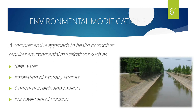The second part is environmental modification. Even if we keep ourselves very hygienic and health-aware, if the water we drink is filthy and contains coliform bacteria, we can't help it. The environment also should be health-promoting — we should be able to get safe drinking water, there should be proper sanitary latrines, control of insects and rodents, and good housing facilities. As an individual, I cannot always be healthy if my environment and surroundings are filthy or polluted.